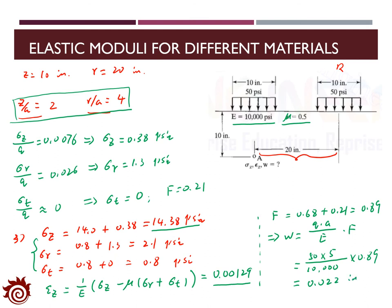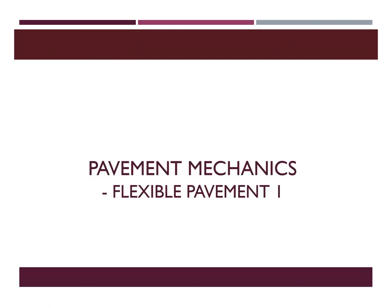So we have found all the variables for the example: vertical stress = 14.38 psi, vertical strain = 0.00129, and vertical deflection = 0.022 inches. That's all for today's lecture. Thank you very much for your attention. In the next lecture, we will continue this topic.